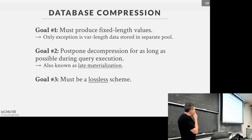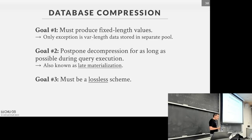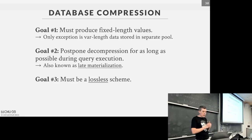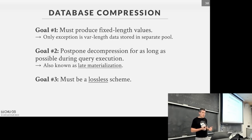Any compression scheme we use has to produce fixed-length values, since we want to store this in a column store with fixed-length offsets. In some cases we also want to delay decompression for as long as possible while executing queries — operating on compressed 32-bit integer codes for as long as possible and only decompressing when we have to show results. One critical requirement: in a database system we must use a lossless compression scheme — no information loss when compressing or decompressing.